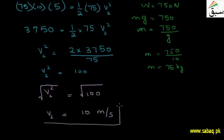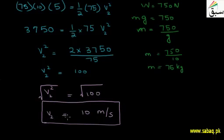So students, we have found the velocity of the diver at point B — that is, when the diver has traveled 5 meters and is 5 meters above the pool surface — the velocity is 10 meters per second.